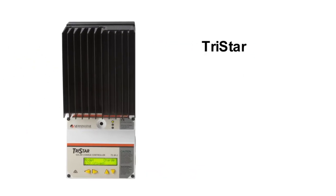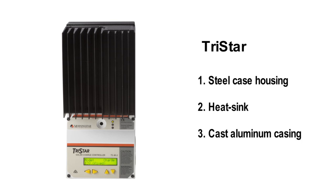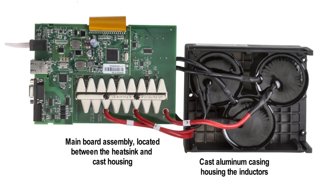There are really three sections to a TriStar: the steel case housing, the connection area, the heat sink, and a cast aluminum casing where the controller's oversized inductors are nested. Each section uses the ideal material for its job. Innovative mechanical engineering places critical internal circuitry between the heat sink and the cast inductor casing. This exercise in electrical traffic management ensures the most efficient and trouble-free internal layout possible.